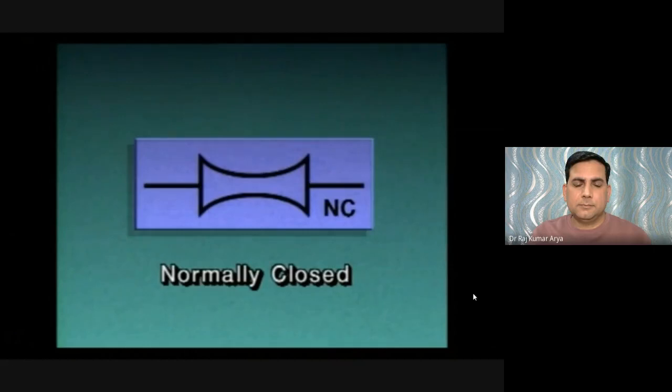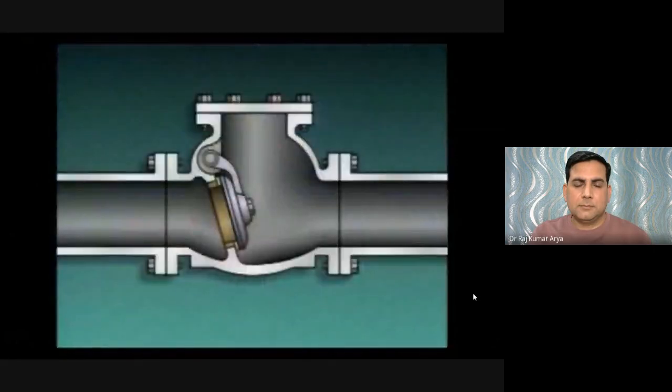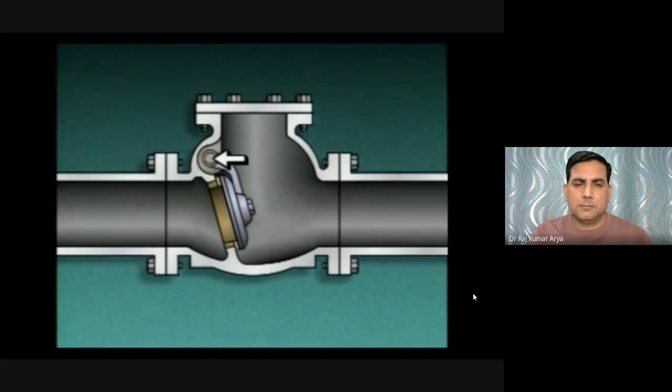Check valves are usually used in piping systems where the reversal or backflow of fluid could upset a process or damage equipment such as a pump. Most check valves operate the same way: fluid flow keeps the valve open, but when flow stops or reverses, the valve closes. A swing check valve consists of a valve body, a seat, a disc, an arm, and a pivot pin.